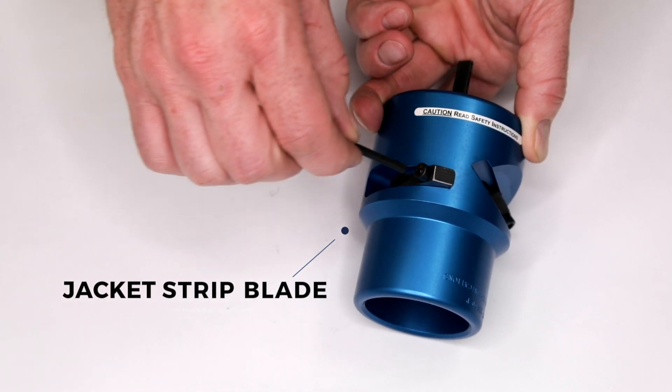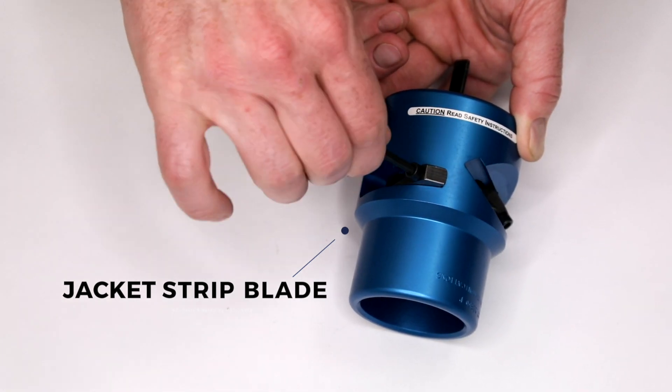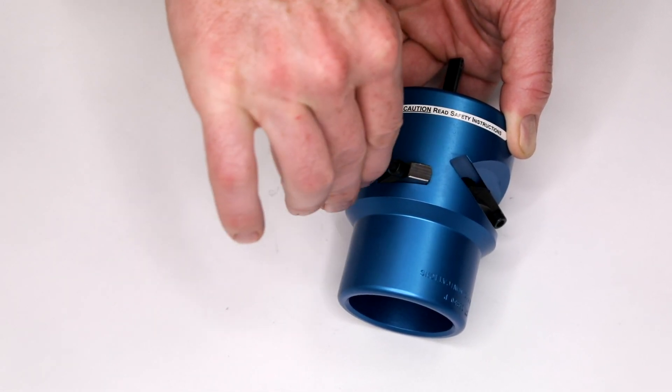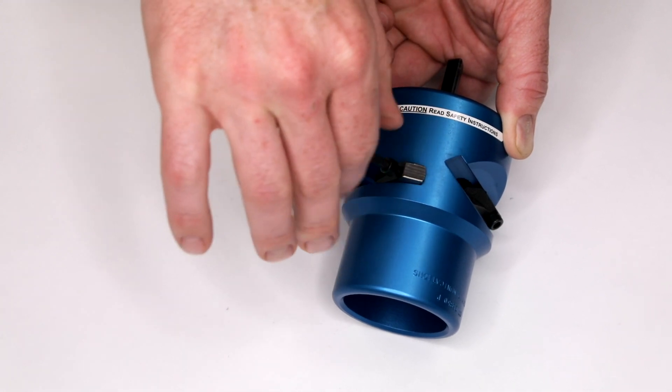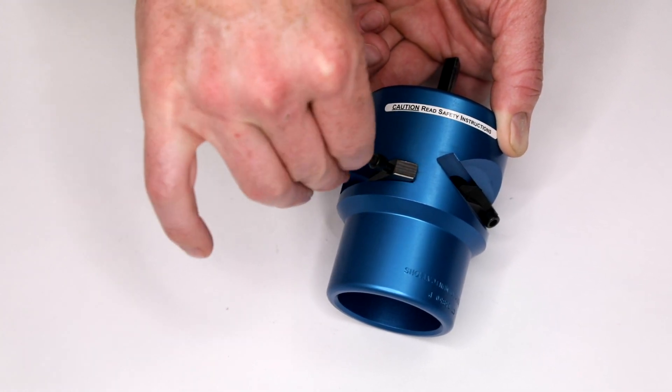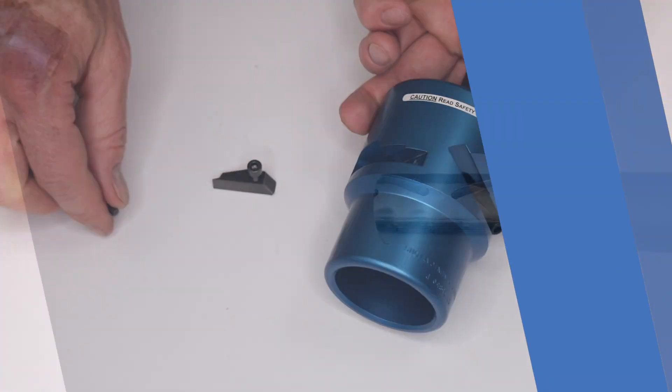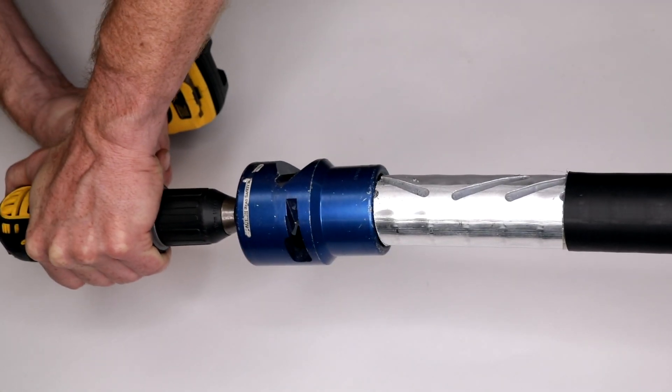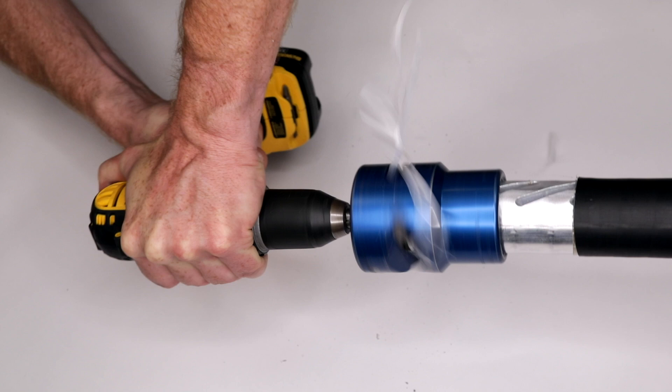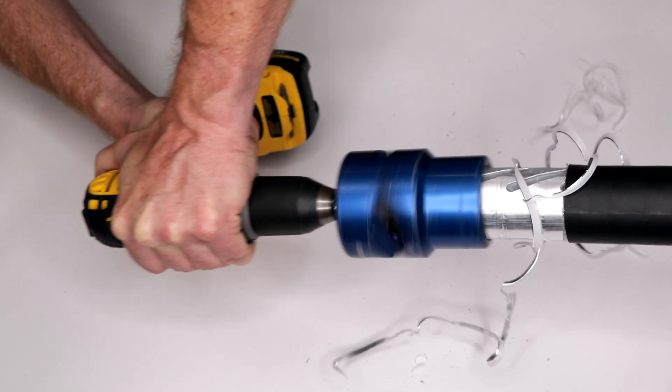Next, slide the drill-mounted cable prep tool onto the cable end and operate in a clockwise direction. Continue until the tool no longer cuts away material and remove the prep tool while still in motion.